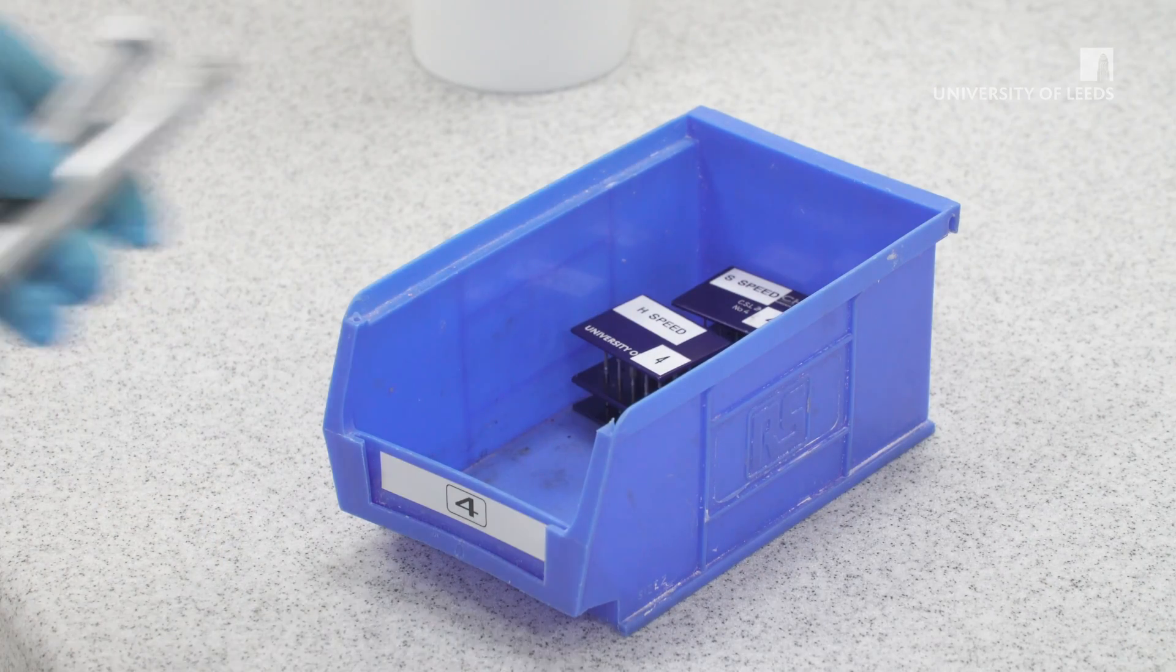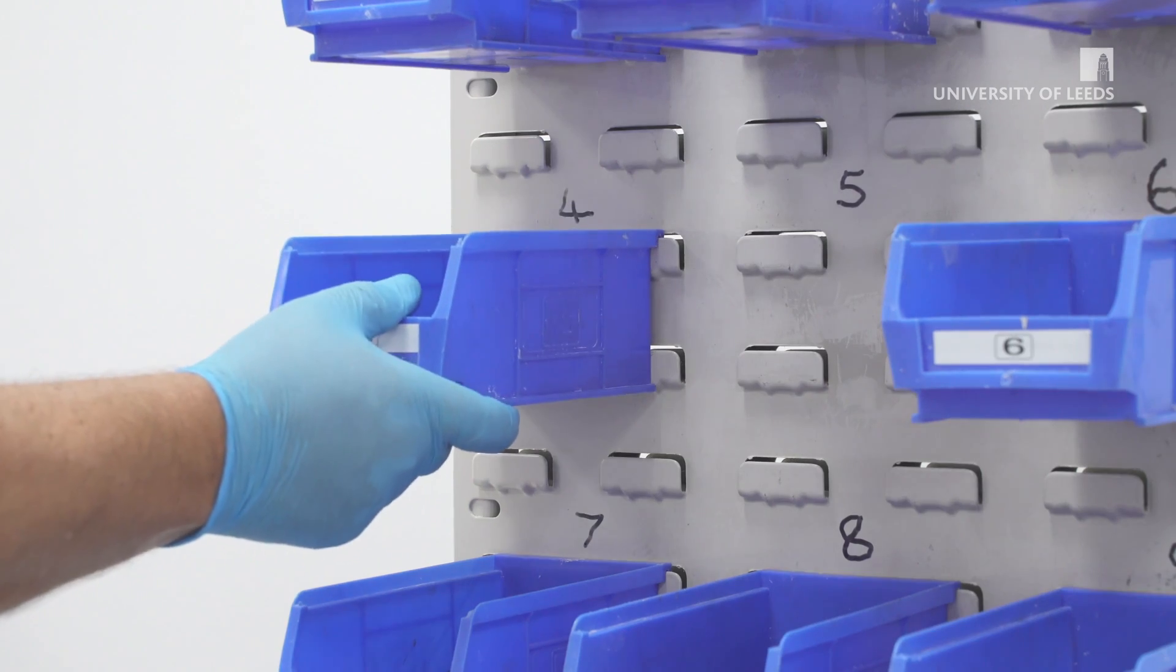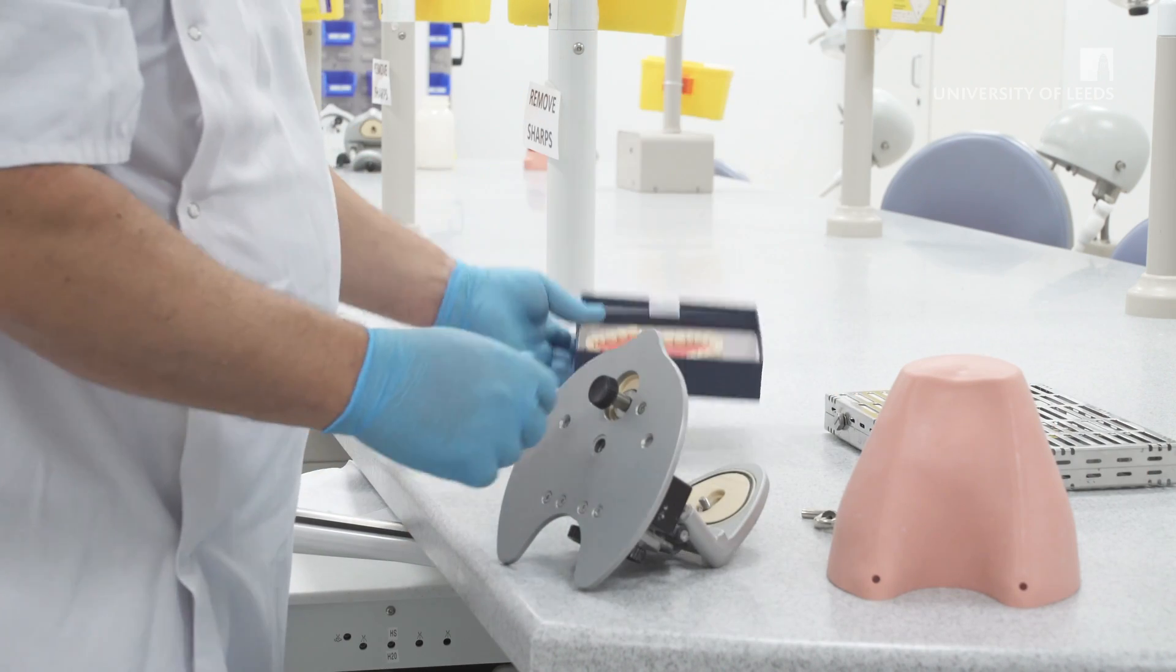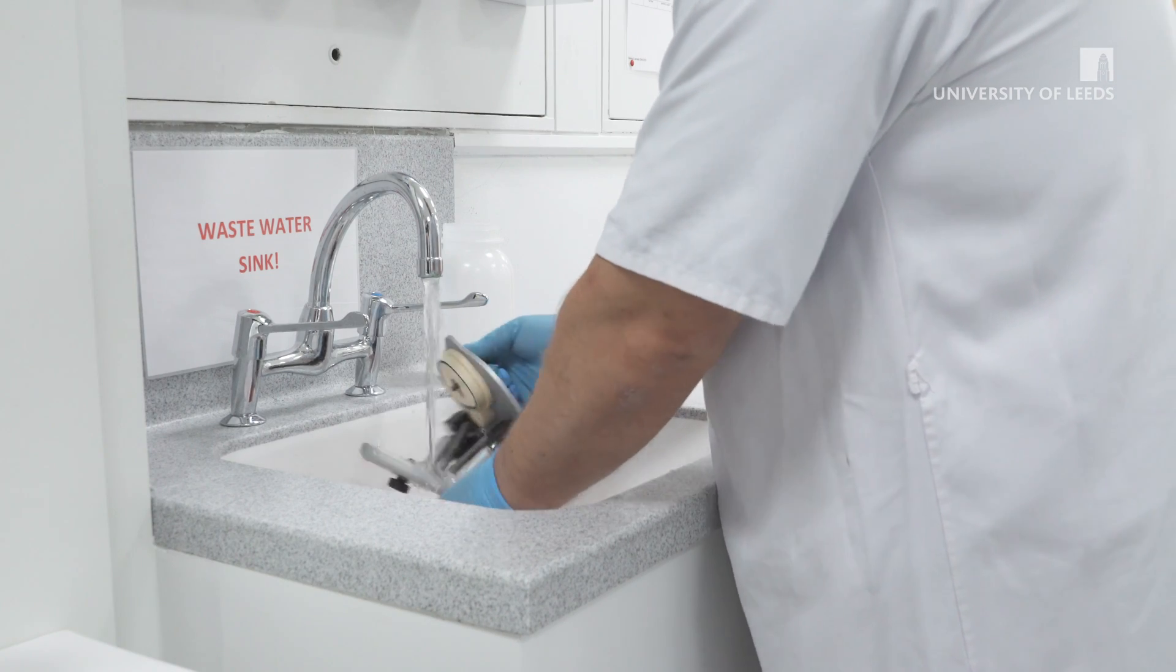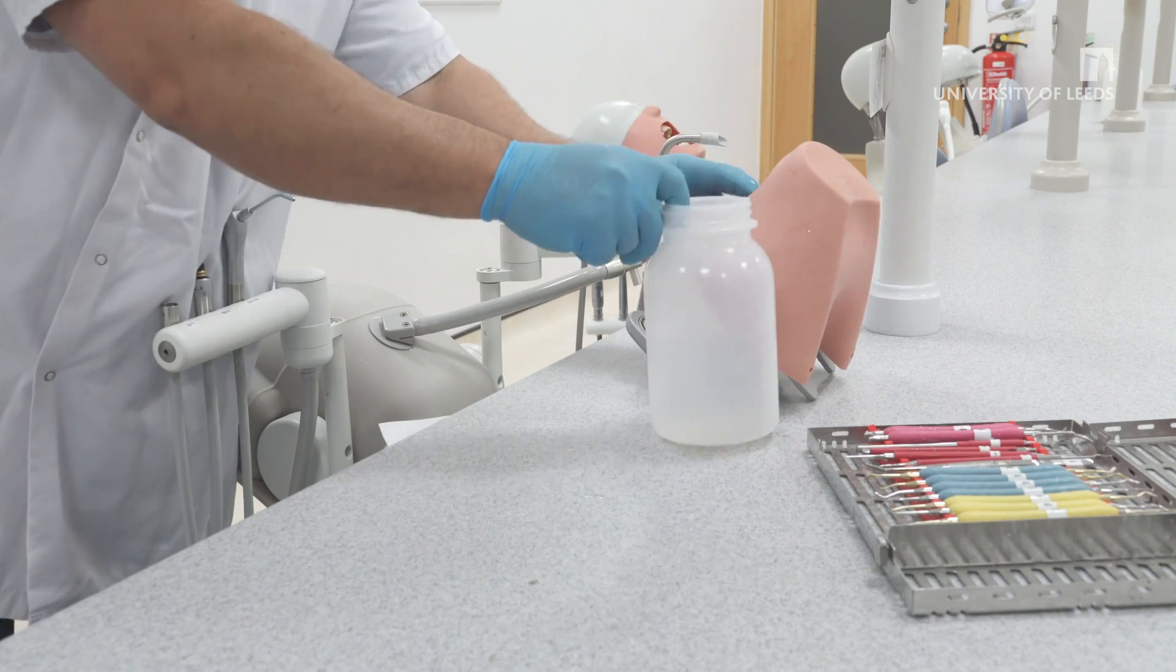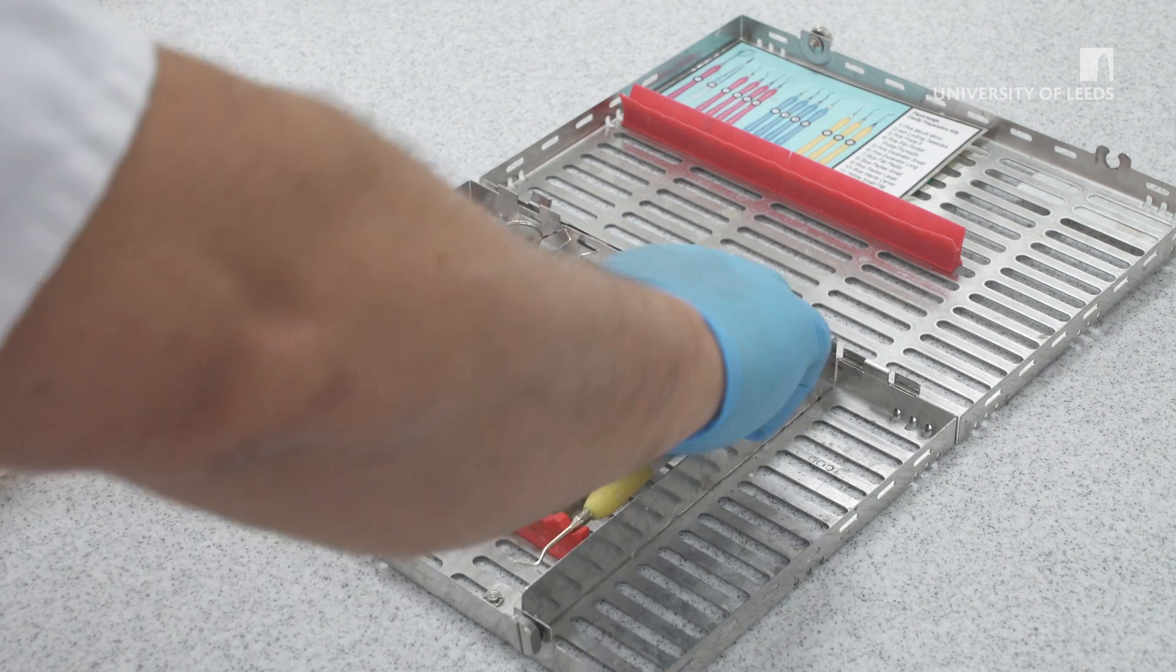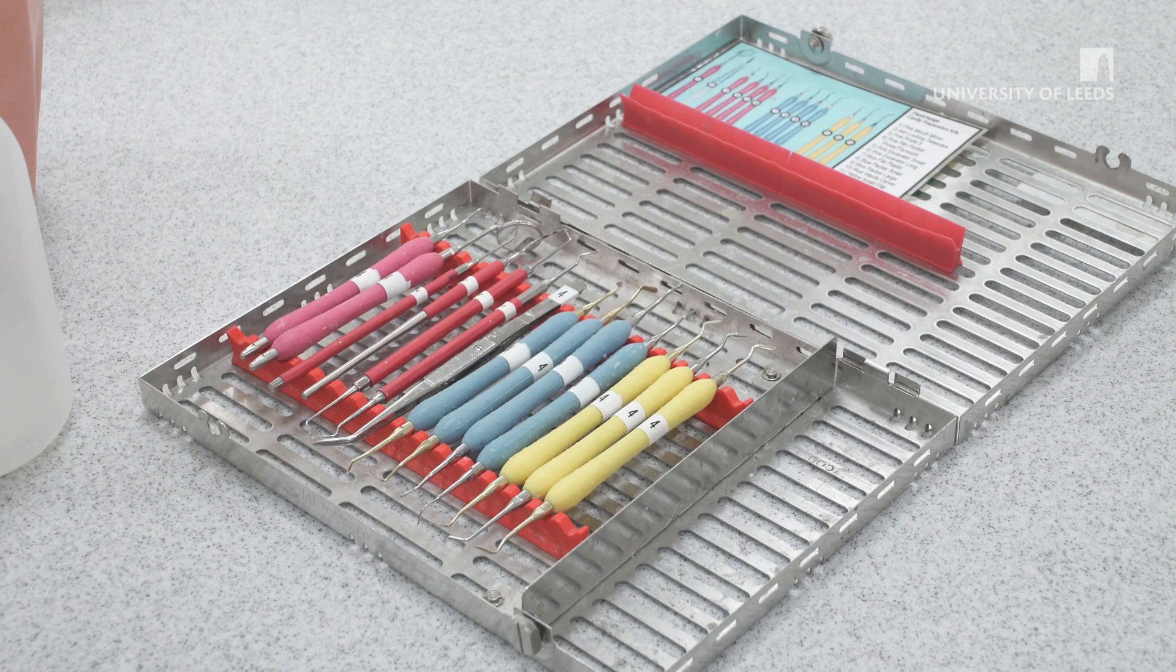At the end of the session, put the handpieces in their boxes and place back on the rack. Disassemble the mask and jaws in reverse order, placing the teeth back in their boxes. Dismount the wastewater bottle and wash these in the wastewater sink. Place the washed items back on the unit and place the simulator in the home position. Arrange the instruments from left to right: 5 red, 4 blue and 3 yellow. You can then get your unit checked by a member of staff.